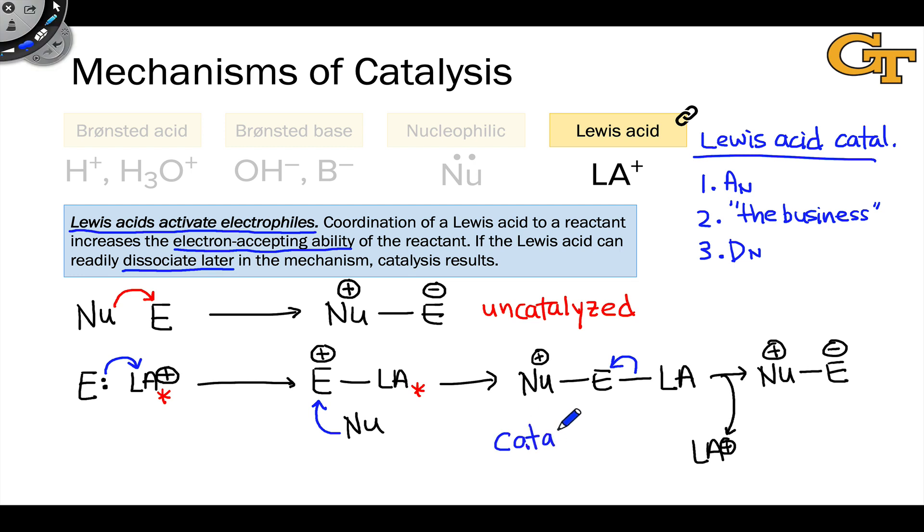Notice here as well, we saw this previously in the acid catalysis and base catalysis videos, that what the catalyst has done by coordinating to the electrophile is turned charge separation, which we definitely see in the uncatalyzed process, into charge transfer, with the positive charge in the electrophile Lewis acid complex being transferred to the nucleophilic atom or group. This is a big reason why the coordination of a Lewis acid to an electrophile lowers the activation energy of a subsequent elementary step. That coordination prevents charge separation.